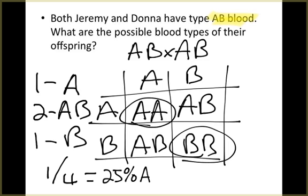So that means that there is a 25 percent chance we could have A. You do the same thing: you have 50 percent chance of AB.